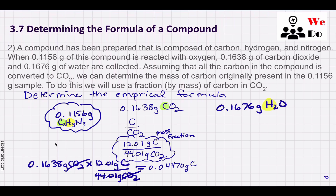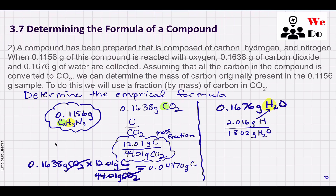Similarly, I can do a mass fraction for hydrogen in water. There are two hydrogens, so it's 2 × 1.008 grams of hydrogen in 18.02 grams of water. I take our amount of water, 0.1676 grams, and multiply by that fraction to figure out how many grams of hydrogen were collected in the combustion reaction.